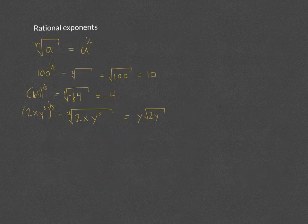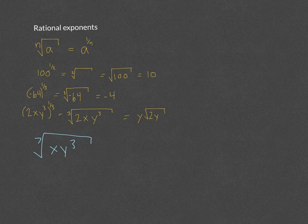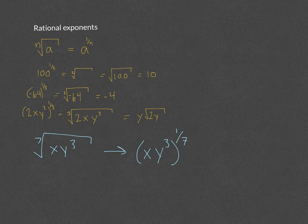This also works in the other direction. The seventh root of xy to the third can be rewritten as xy to the third, all to the 1/7 power. You can go both directions with that conversion.